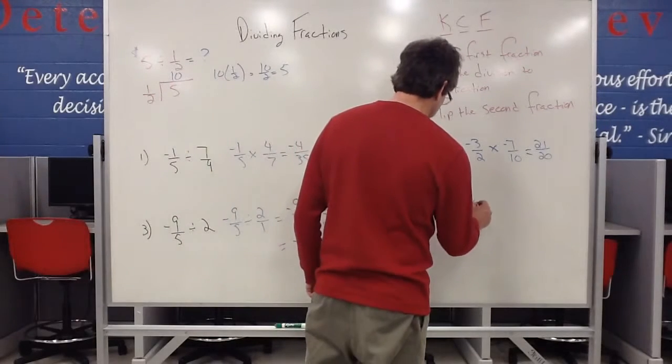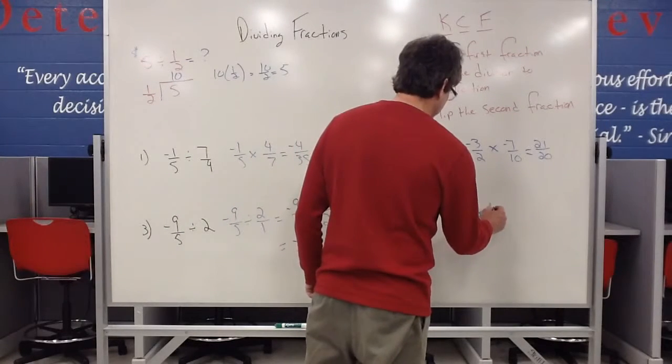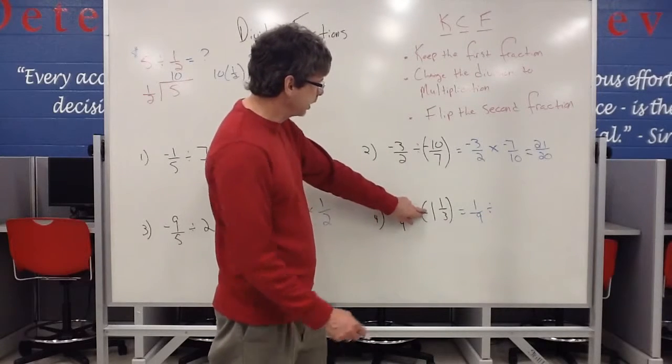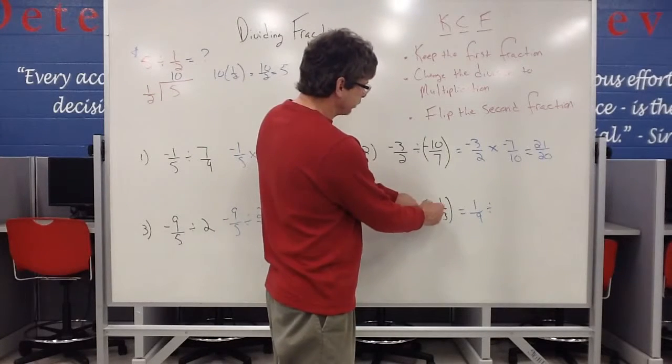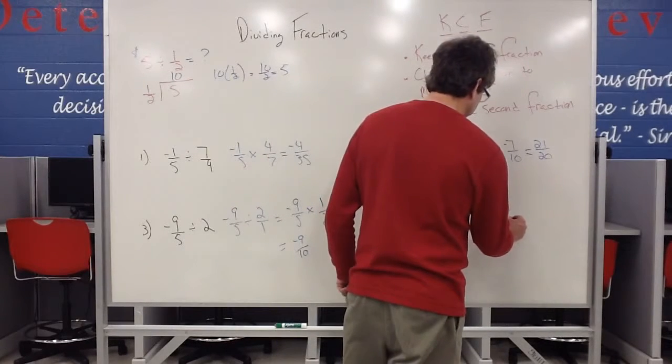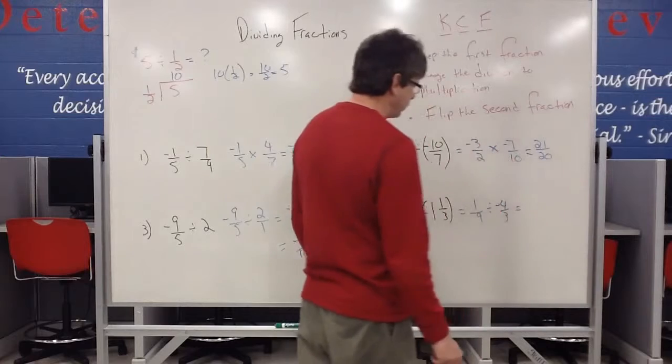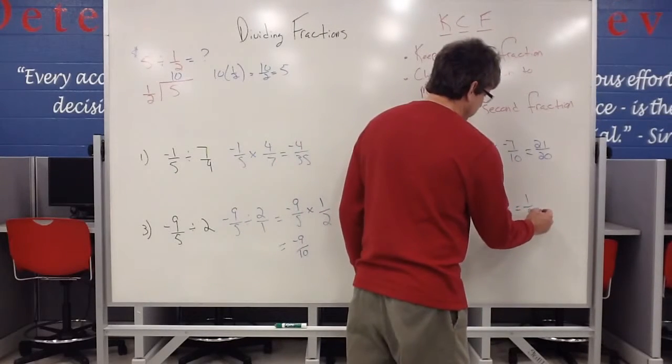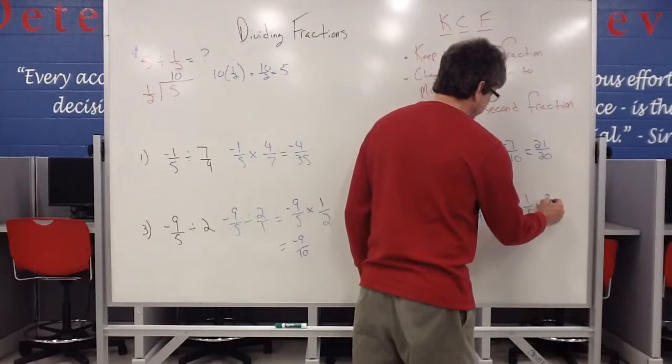So one-ninth divided by, and again, it's a good idea to change this to a fraction. Three times one is three, plus one is four. So we leave that as negative four-thirds. And then with the Kentucky chicken fry, keep change flip, one-ninth times a negative three-fourths.